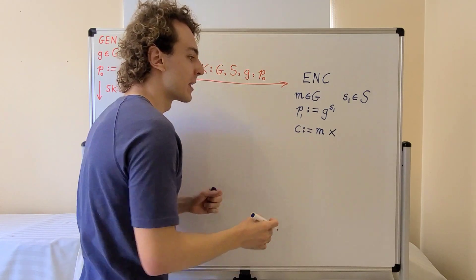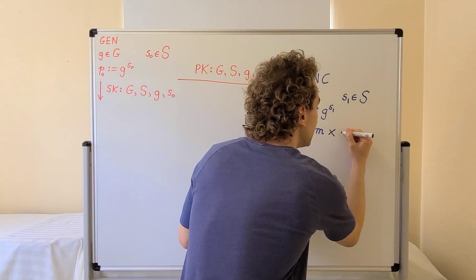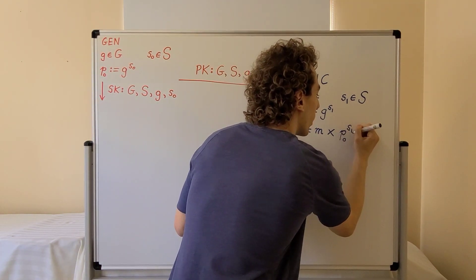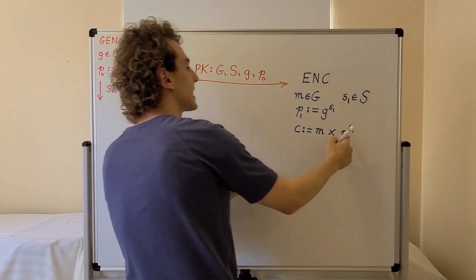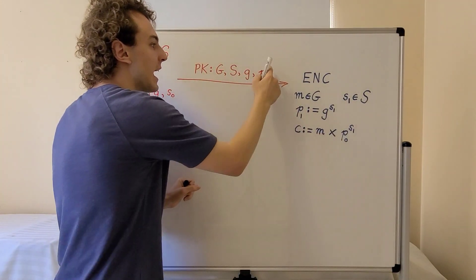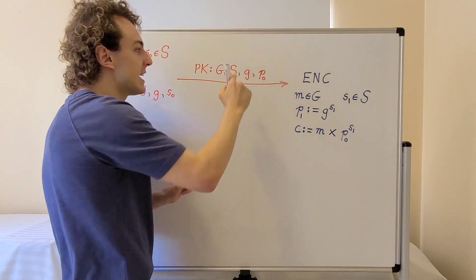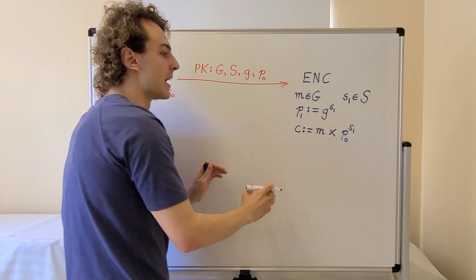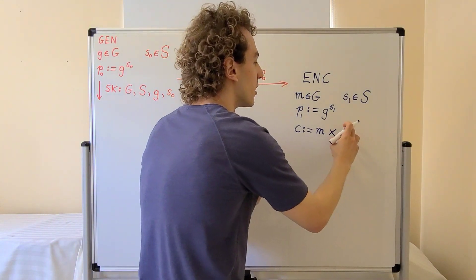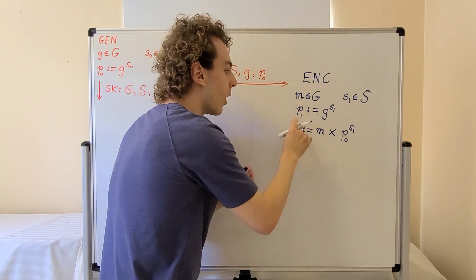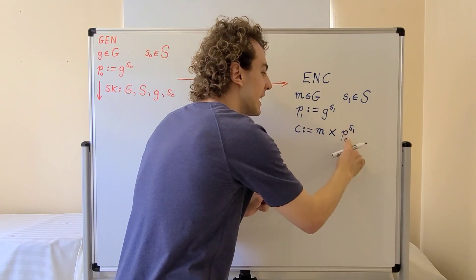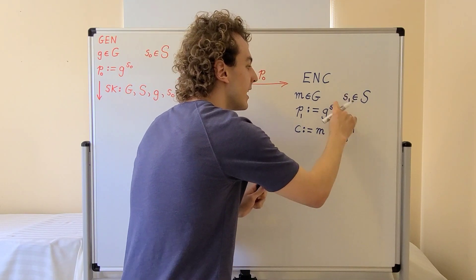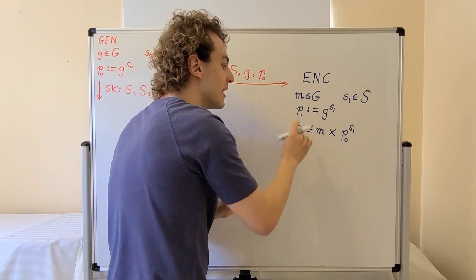We also generate the ciphertext. The ciphertext c is defined as the message times p0 to the power of s1 — where the times symbol is a placeholder for the group operation, which does not have to be multiplication. Both the generator and p0 came in the public key, so they are publicly available. The secret value s1 appears in the definitions of both p1 and c.